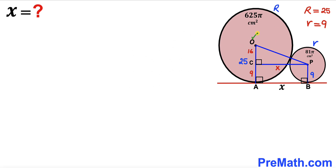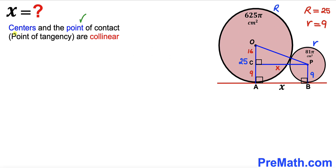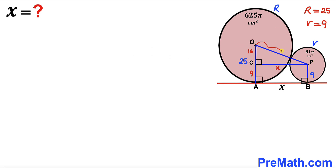I've now connected center O to center P. Recalling the crucial fact that the two centers and the point of tangency are collinear, segment OP equals the radius of the larger circle plus the radius of the smaller circle: 25 + 9 = 34. So OP = 34 cm.